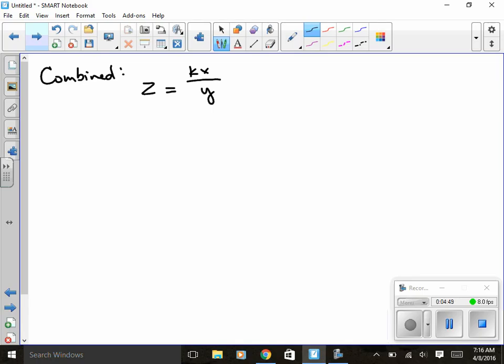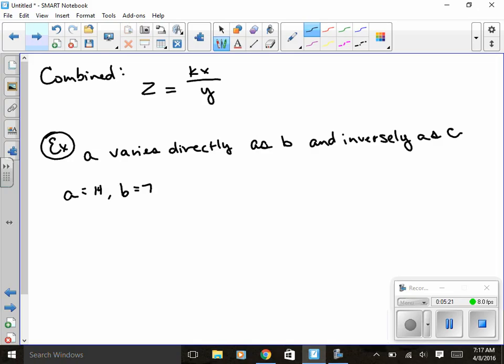So for instance, A varies directly as B and inversely as C. So A equals 14, B equals 7, and C equals 3. What does A equal when B equals 4 and C equals 8.